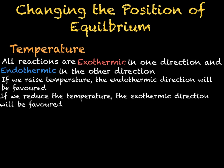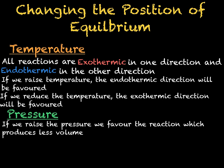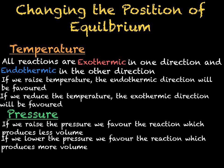We can also change the position of equilibrium by increasing or decreasing the pressure. Many reactions have a greater volume on one side, either of the products or reactants. We can tell this by looking at the number of molecules involved in the reaction. When we raise the pressure, we will favour the reaction which produces less volume — fewer molecules. If we lower the pressure, it will favour the reaction which produces more volume or more molecules. This is because it is much easier to fit a smaller volume into a smaller space.